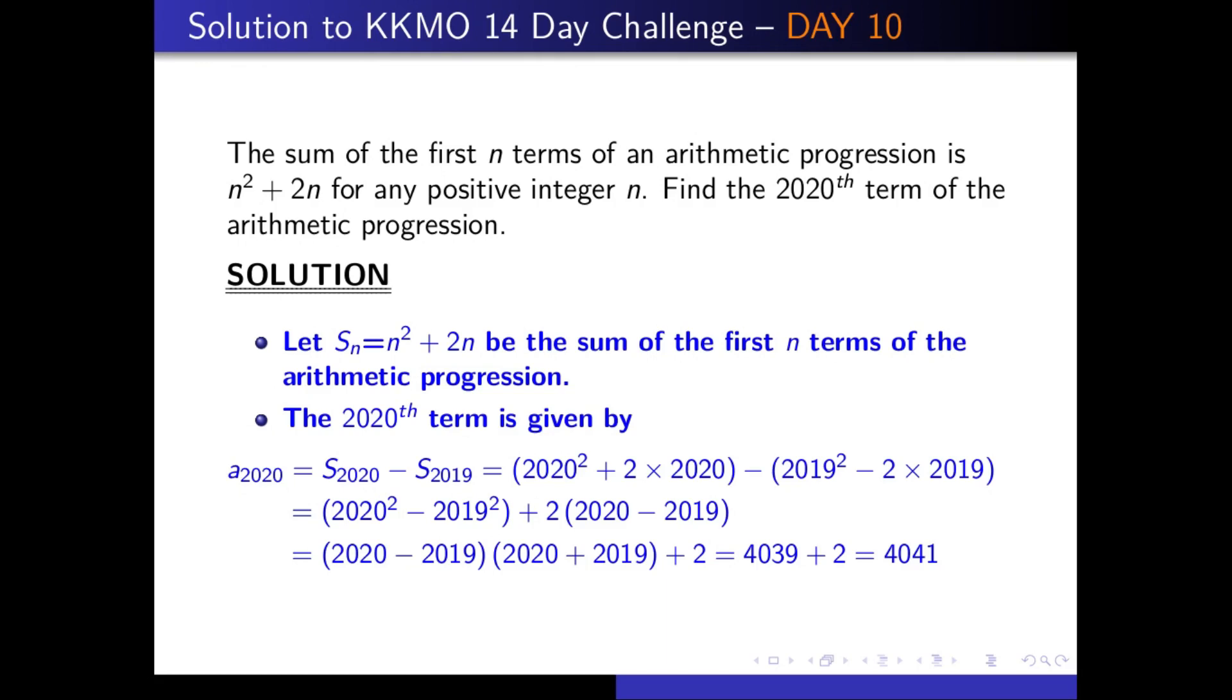We now go to the solution. Let S_n represent the sum of the first n terms of the arithmetic progression. To find the 2020th term, we subtract the sum of the first 2019 terms from the sum of the first 2020 terms. This will give us the 2020th term.